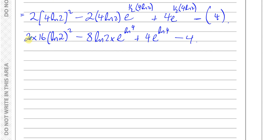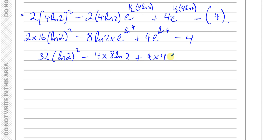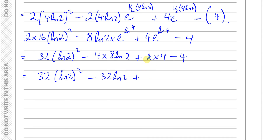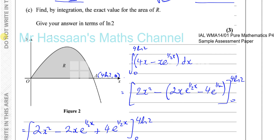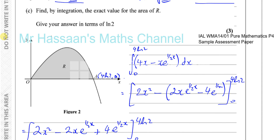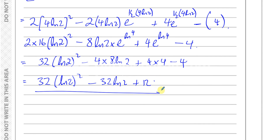So our expression simplifies: 2 times 16 gives 32, leaving 32(ln2) squared. The middle term: 4 times 8 ln2 gives 32 ln2. The last term: 4 times 4 gives 16. Then subtracting 4 from the lower limit gives 12. So the exact area of R equals 32(ln2) squared minus 32 ln2 plus 12, expressed exactly in terms of ln2 as required.